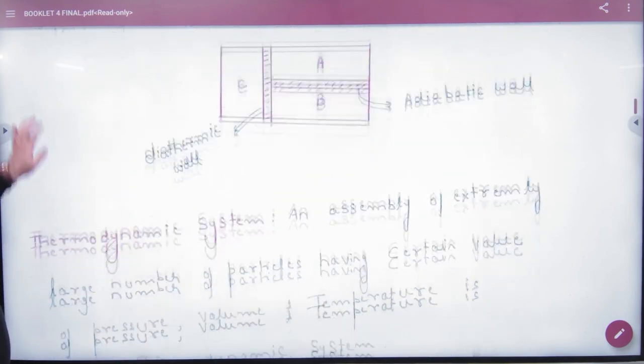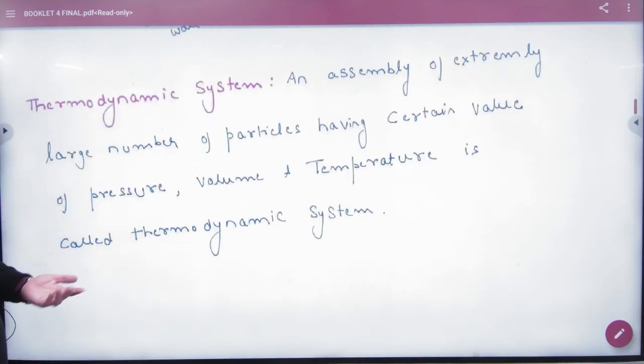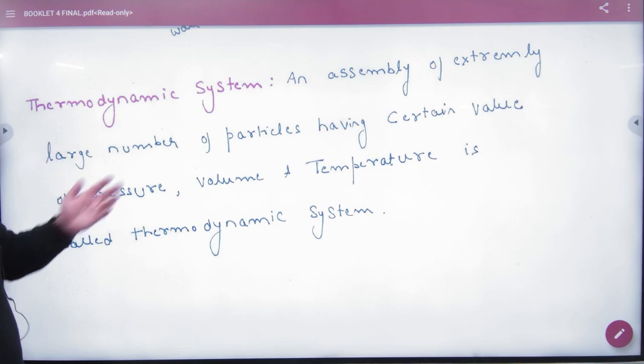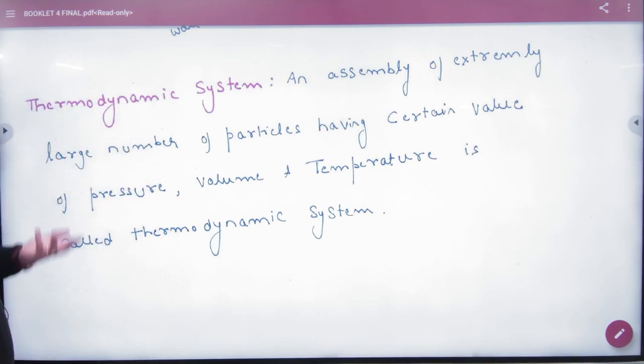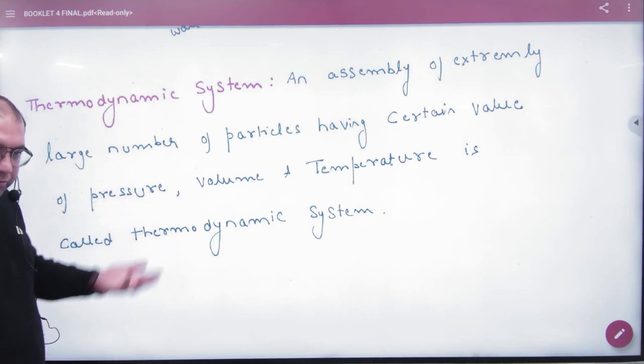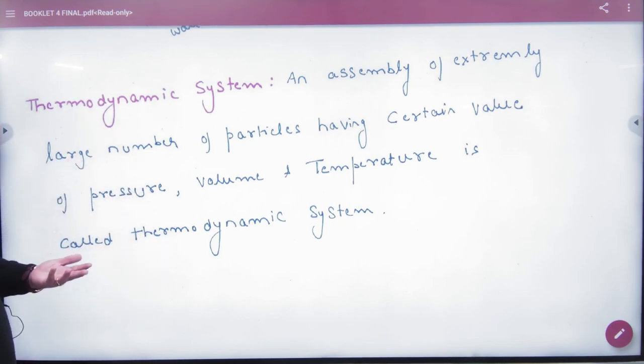Next is, what is a thermodynamic system? A thermodynamic system is an assembly of extremely large number of particles, such as gas molecules, which have certain values of pressure, volume, and temperature.